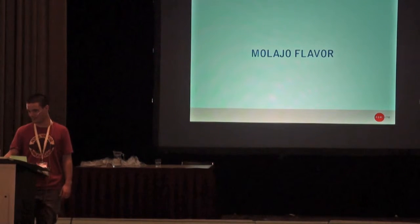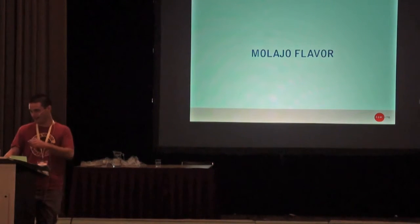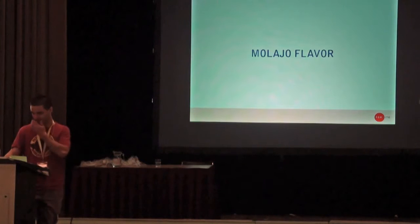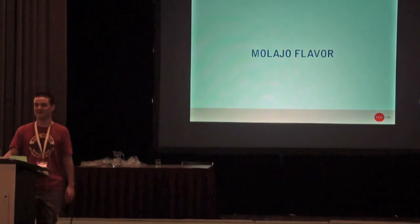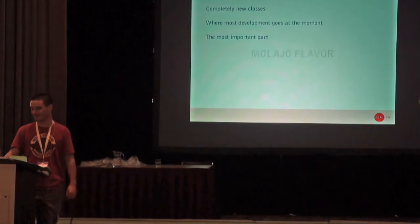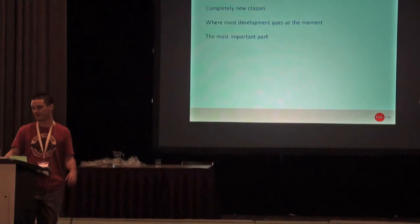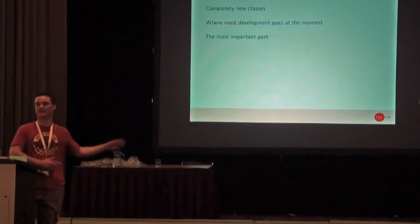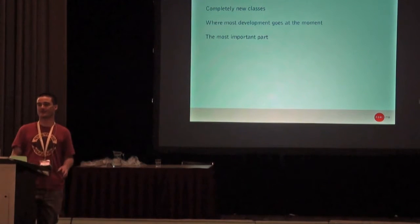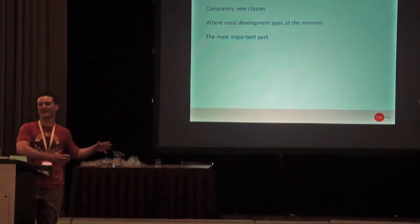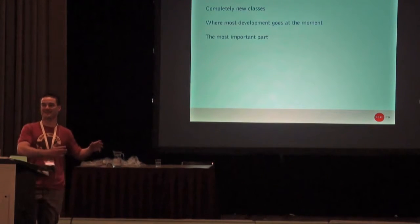Now we proceed to the Molagio flavor, which is the main development tree. These are completely new classes, and this is where most development goes at the moment. It is the most important part of the project — so actually this is Molagio ACL, but it's a module ACL plus the rest of the stuff.